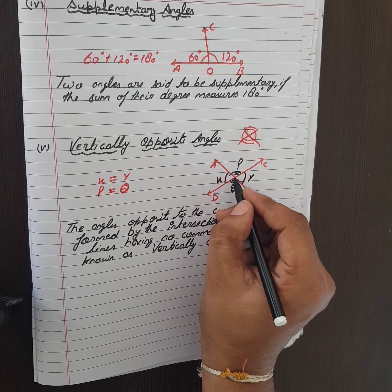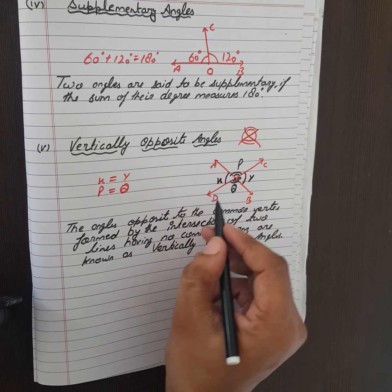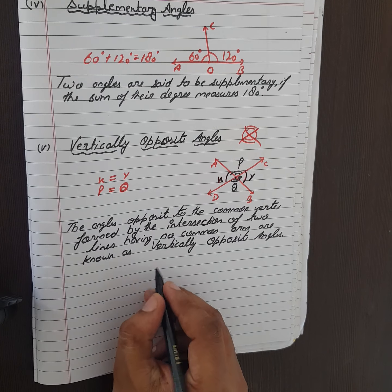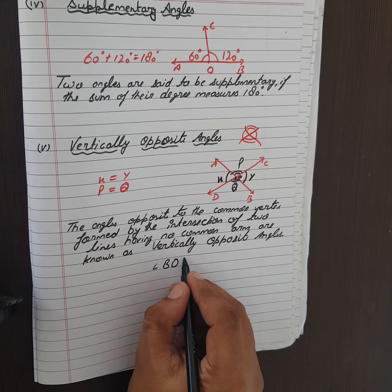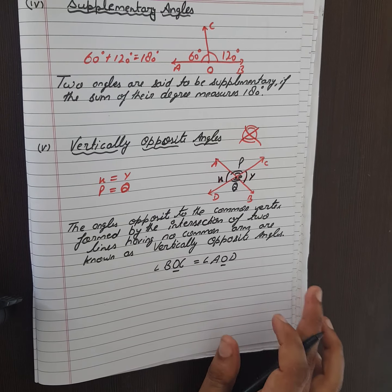Next is complementary angles. The angles are said to be complementary if their sum is 90 degrees. Like this: 60 and 30, their sum is 90, so these are called complementary angles.